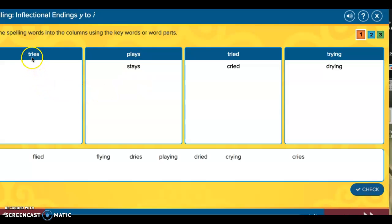And finally, tries has i-e-s. Can you find any of the words down below that end with i-e-s? There are two. Good. Hope you were thinking tries. So again, sort the words, click check, and then move on to level two and three. And then you're done with this spelling activity.